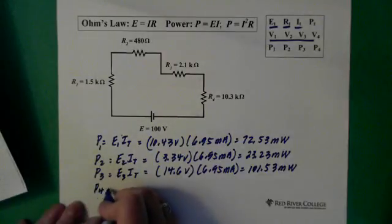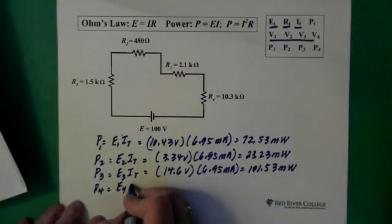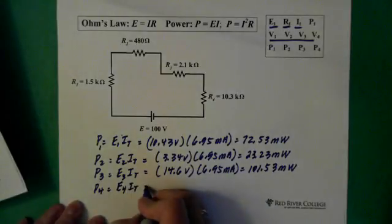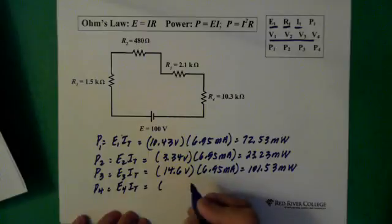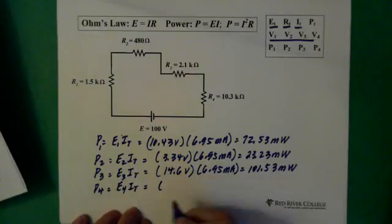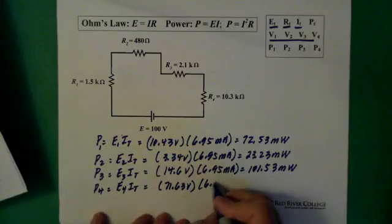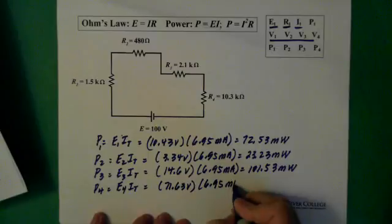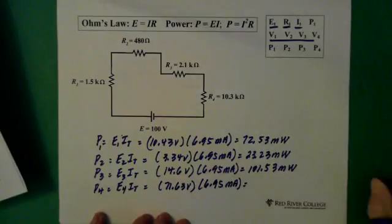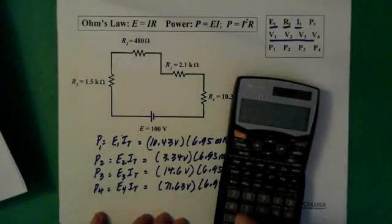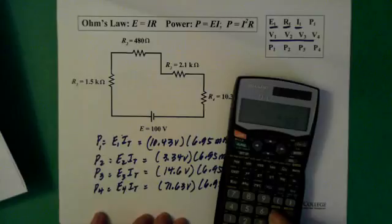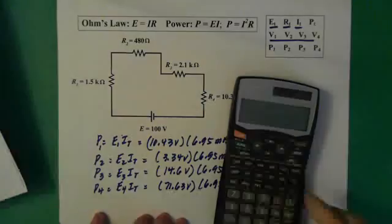So power 4, again same formula, you don't have to use this one but it's just easy. Voltage 71.63 volts times 6.95 milliamps equals 71.63 times our current.